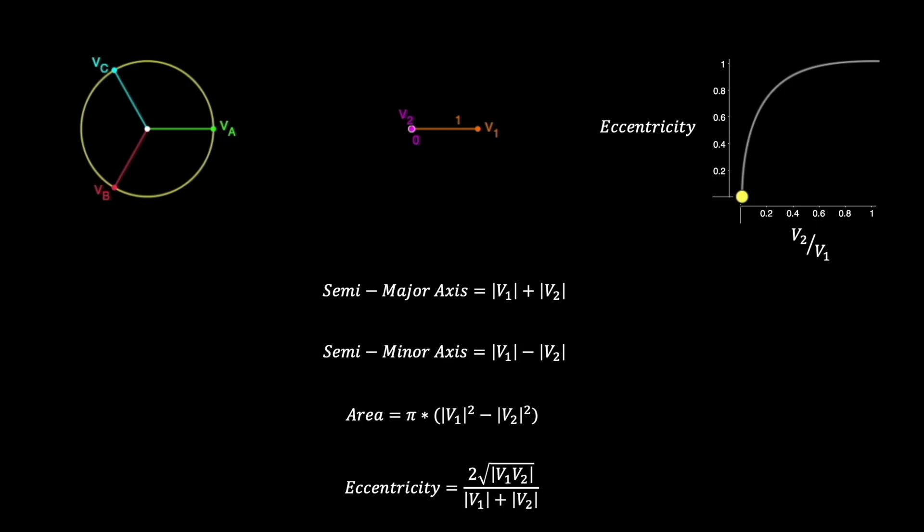When the v2 over v1 ratio is zero, the eccentricity is zero as well, and when v2 over v1 is 100%, so is the eccentricity.